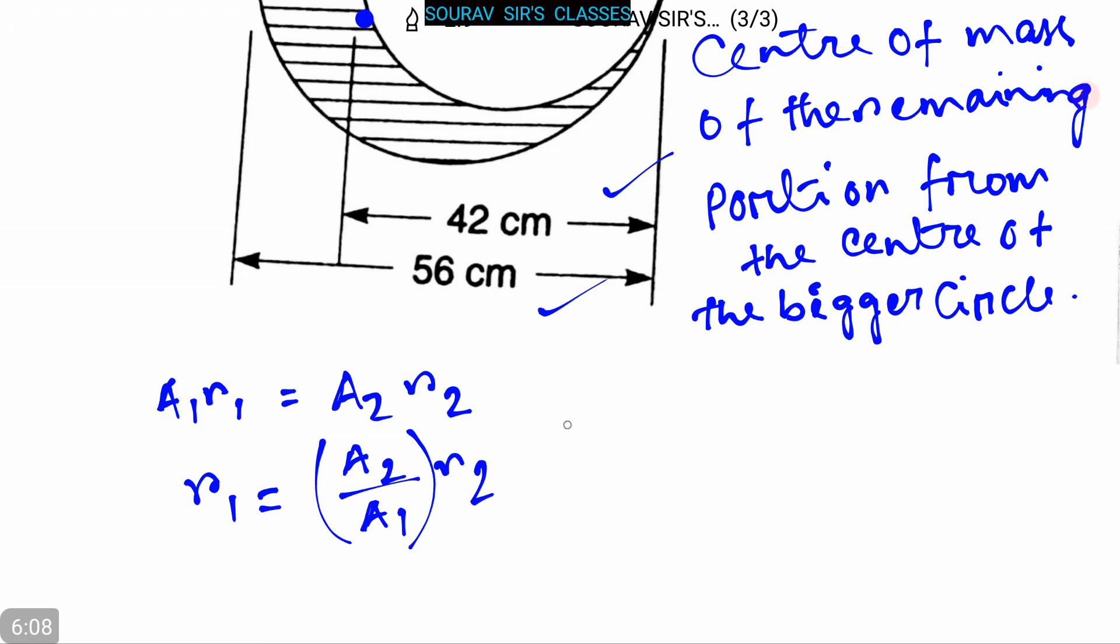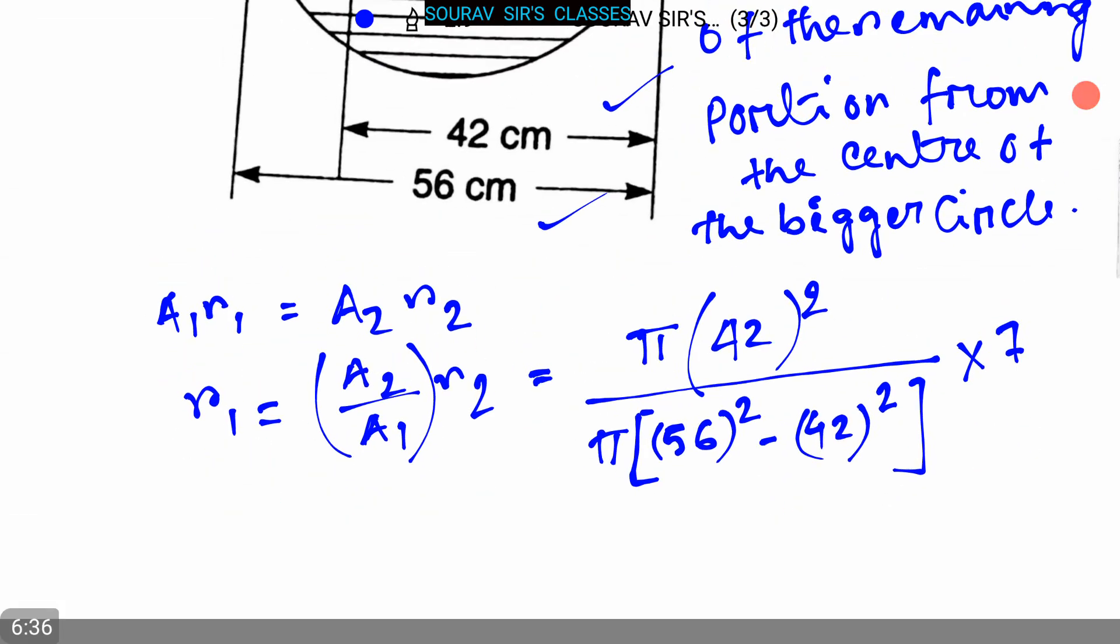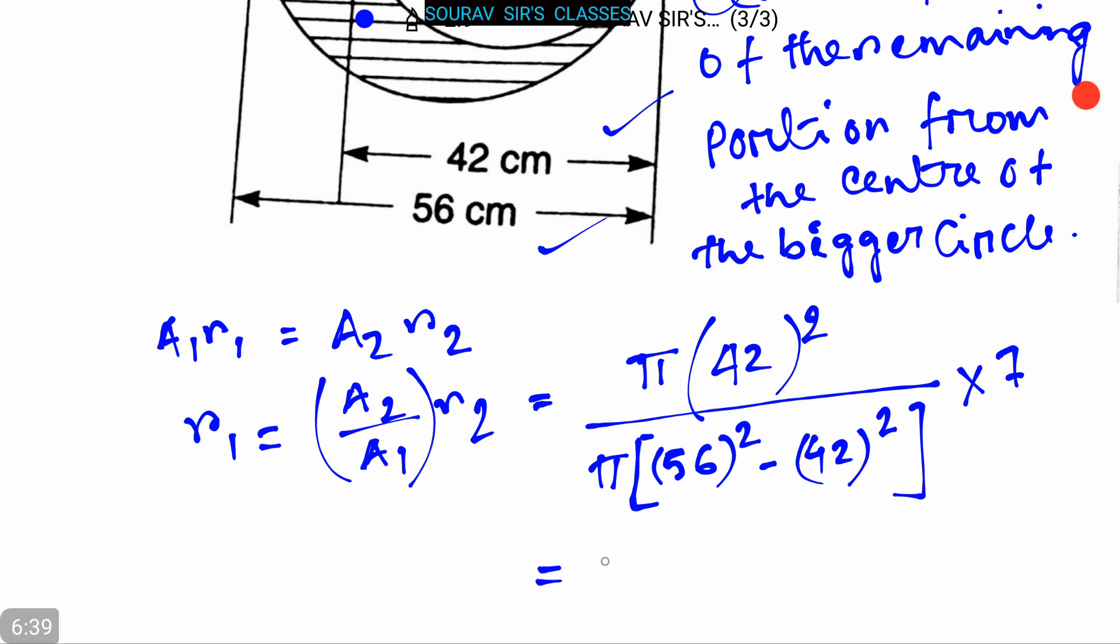By putting the values we can rewrite it as pi into 42 square divided by pi into 56 square minus 42 square into r2.